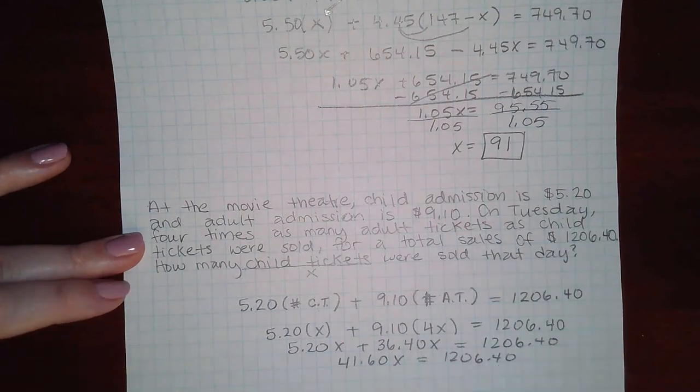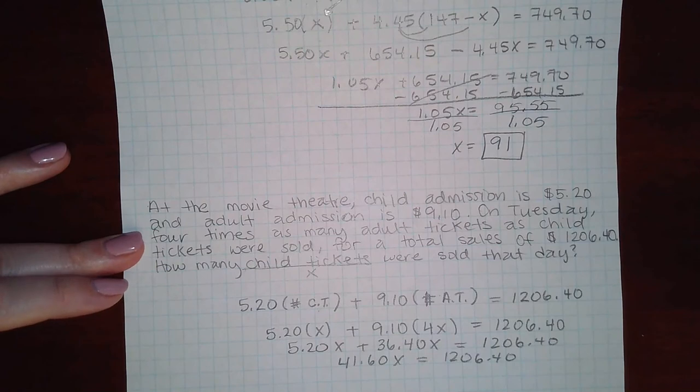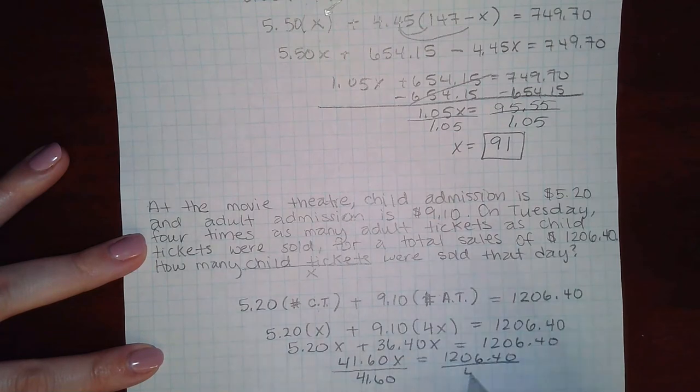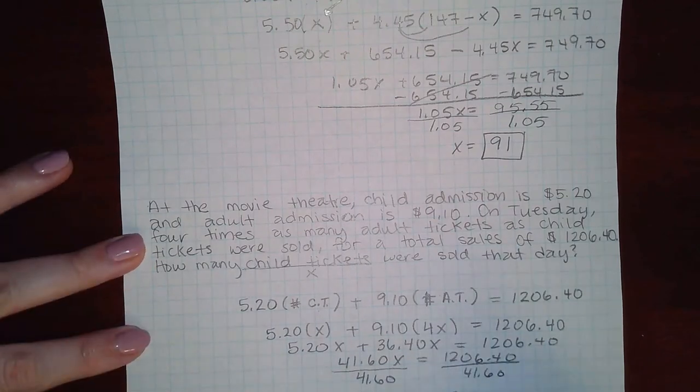And then if I divide by 41.60 on both sides, I get X equals 29.